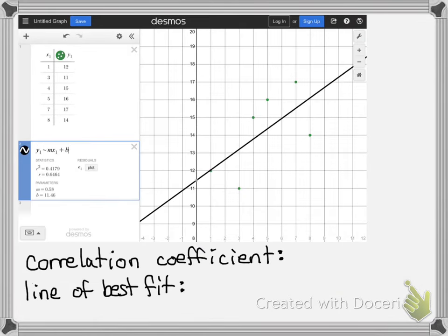Once you type that in, it gives you a lot of information. As you can see right here, R equals 0.6464. But to write the actual value for my correlation coefficient, I'm rounding to the nearest hundredth. So that'll be R equals 0.65.